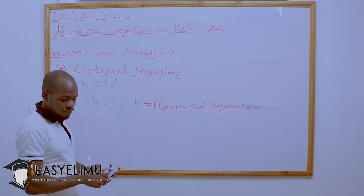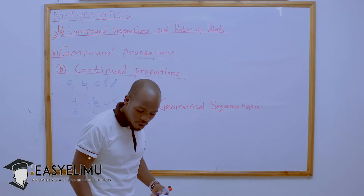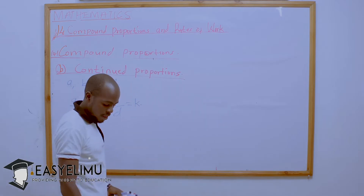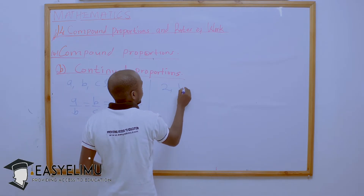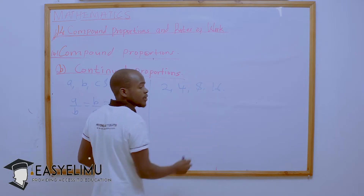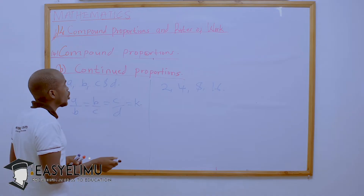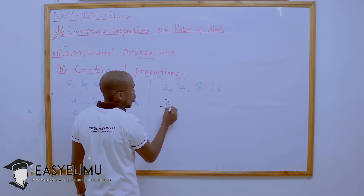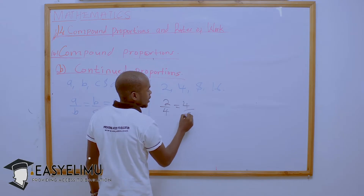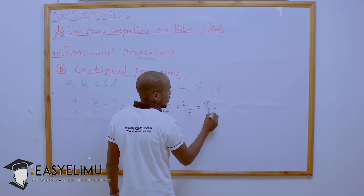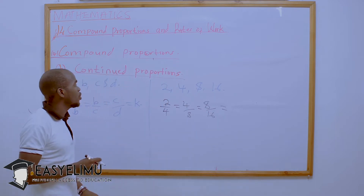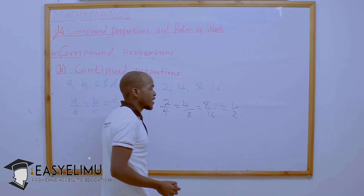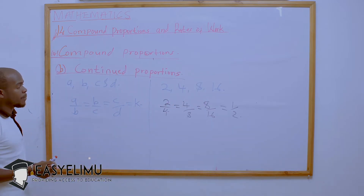For example, consider 2, 4, 8, and 16. To verify these are in continued proportion, we check: 2 over 4 equals 4 over 8 equals 8 over 16. Each ratio gives one half, so these numbers are indeed in continued proportion.